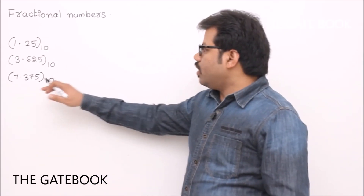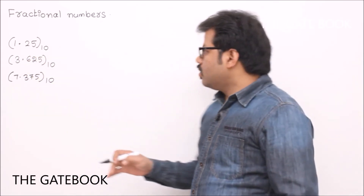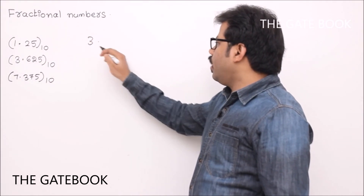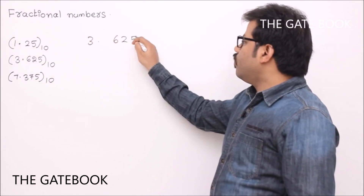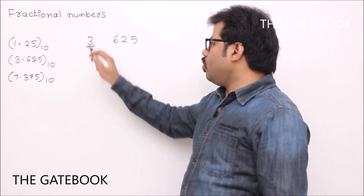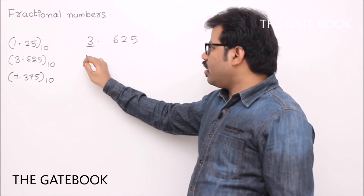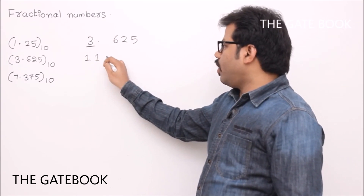Let us see the second example: 3.625 base 10. First, convert 3 into binary. We know the procedure — you get 1, 1, correct? Then place the point.